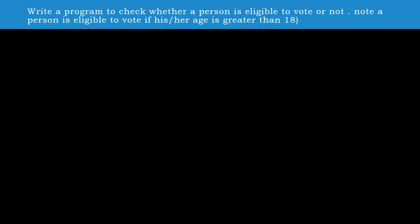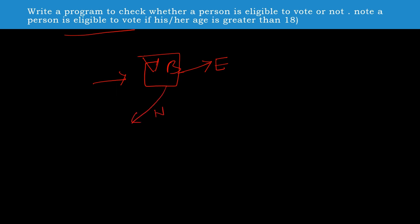Think about the problem: you go to a voting booth and there will be an officer. He checks your age — if you are eligible, you will be allowed inside the booth. If you are not eligible, you will be returned back. This condition is checked at the voting booth, and similarly we want to write a program for it.